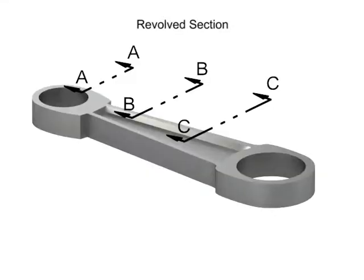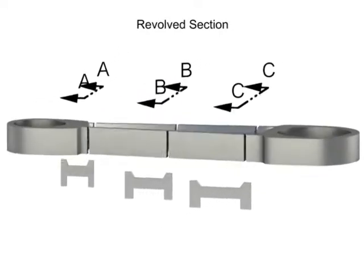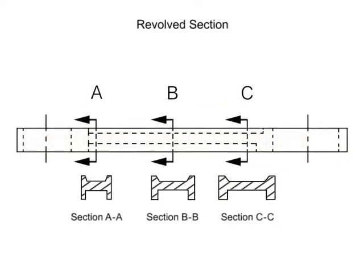Removed sections are actually revolved sections that are moved to another location on the drawing. Removed sections are used when a part, such as this connecting rod, changes in cross section from one point to another.